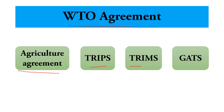The last agreement is GATS — General Agreement on Trade in Services — which came into effect on 1st January 1995 as a result of the Uruguay Round negotiations. GATS was created to extend the multilateral trading system to the services sector, in the same way the General Agreement on Tariffs and Trade (GATT) provided such a system for merchandise trade. All members of WTO are party to the GATS.